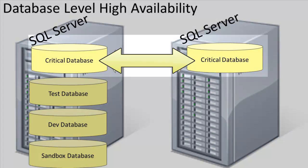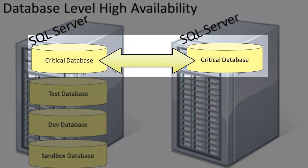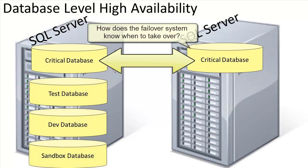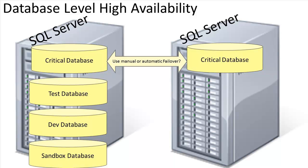If there is only one database on your server to protect with high availability, then you would want a database-level high availability solution. In either case, do we want the high availability solution to detect its own failure and run the redundant system automatically, or do we want to just get an alert and then make the switchover ourselves? Some of the existing high availability options allow for automatic failover, and some require that the process be done manually.